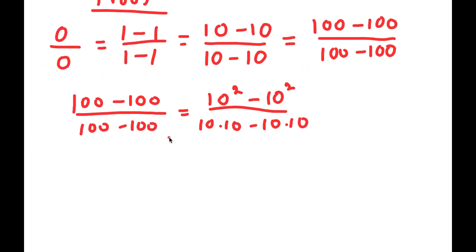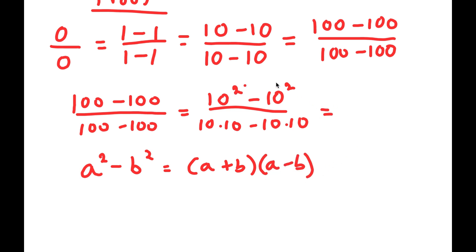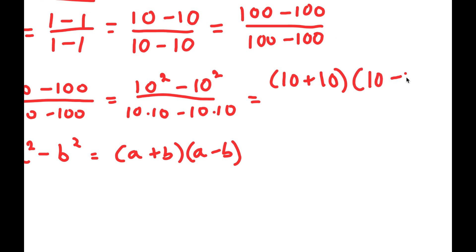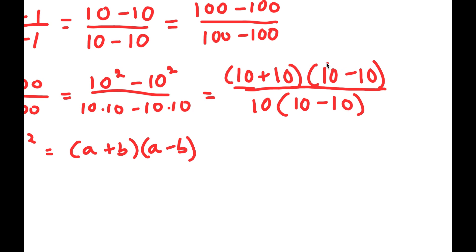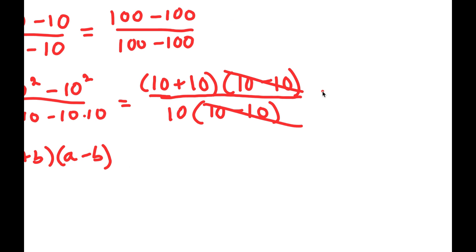Now for 10 squared minus 10 squared, I can use the algebraic property that states if I have something in the form a squared minus b squared, this is equal to (a plus b) times (a minus b). So 10 squared minus 10 squared is going to equal (10 plus 10) times (10 minus 10). I have this over 10 times 10 minus 10 times 10. What I'm going to do is factor out 10 from that, so I get 10 times (10 minus 10). Now we have (10 minus 10) divided by (10 minus 10), so I can simply cancel these two out. This results in (10 plus 10) over 10.